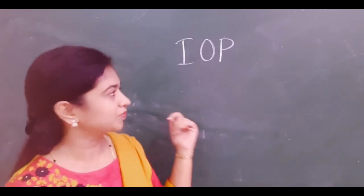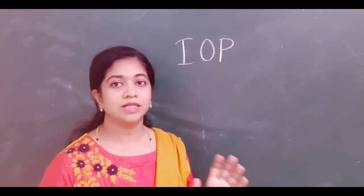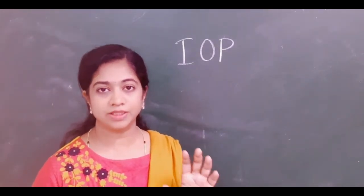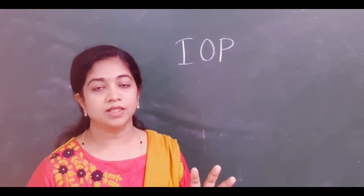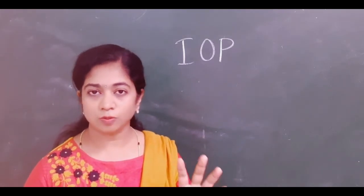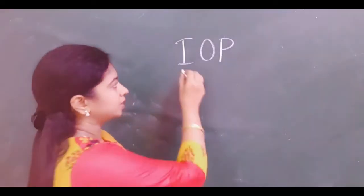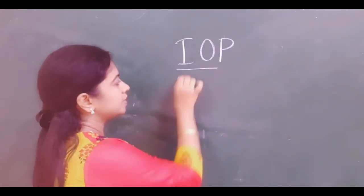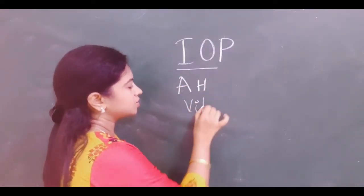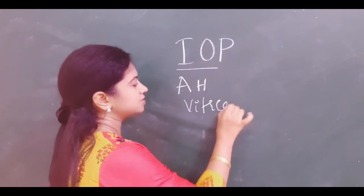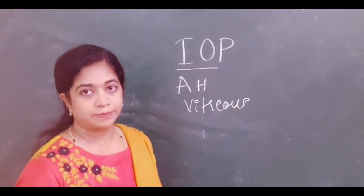So let's begin with the intraocular pressure. What is intraocular pressure? It is the pressure within the eye which keeps the eyeball distended to carry out the normal functions of the eye. It is majorly contributed by the aqueous humor as well as the vitreous. These two factors contribute to intraocular pressure.